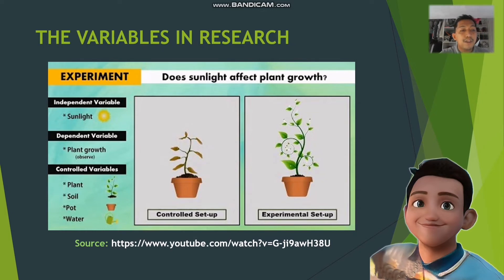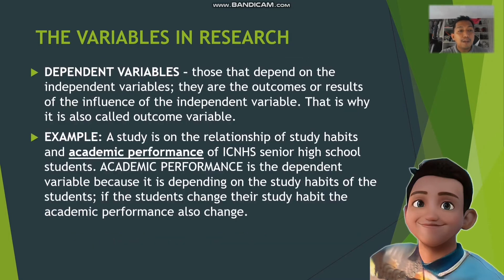The dependent variable in that experiment is plant growth, which you can observe in the controlled and experimental setups. Dependent variables are those that depend on the independent variables — they are the outcomes or results of the influence of the independent variables, which is why they are called outcome variables. In the study habits example, academic performance is the dependent variable because it depends on the study habits of the students.